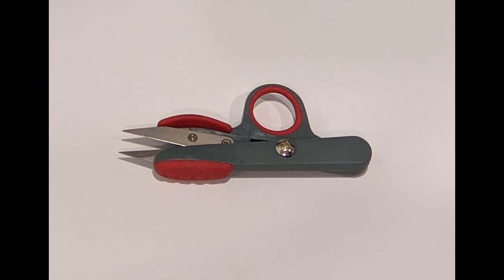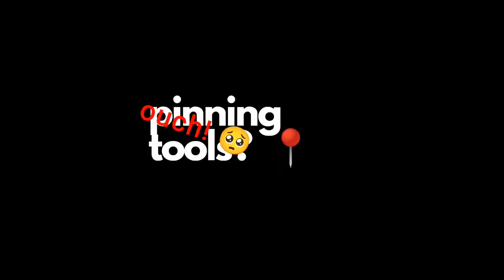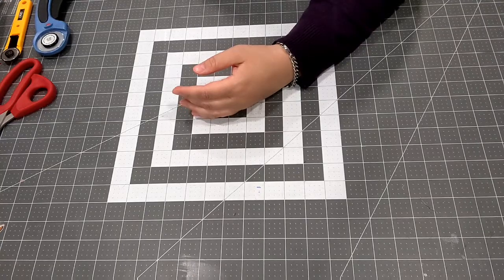You're going to want some thread snips. It is really hard snipping threads with big sewing shears. You can find these at most craft stores. Some of them will look like this, some will look like a little pair of scissors. Honestly, both will work—it'll just make it much easier trimming those threads.